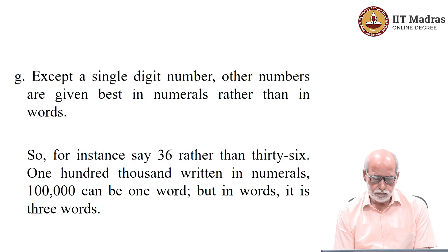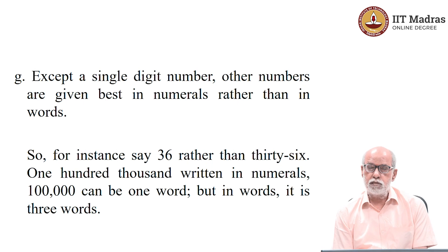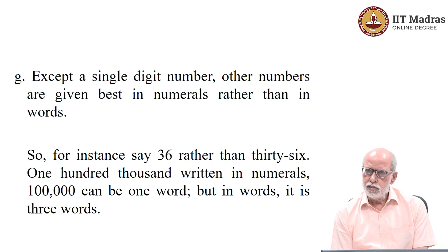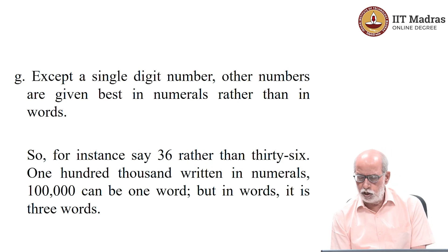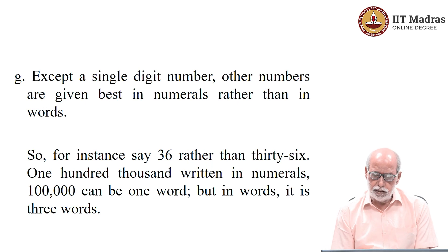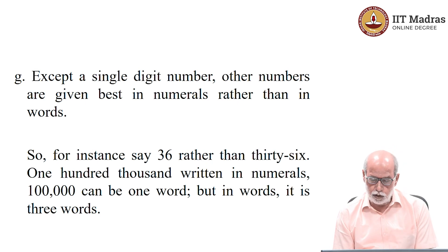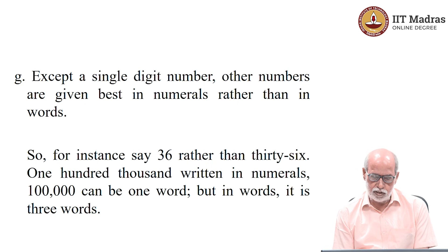These discourse markers and connectors should be there only when they make the passage easier to read — that is the principle. Regarding numbers: it is better to use numerals when you have a double-digit or longer number. Single digit, it doesn't matter. But when you write 36, in numerals it is only one word, while in words it is two words. One hundred thousand can be three words in words, but in numerals it is still one word.